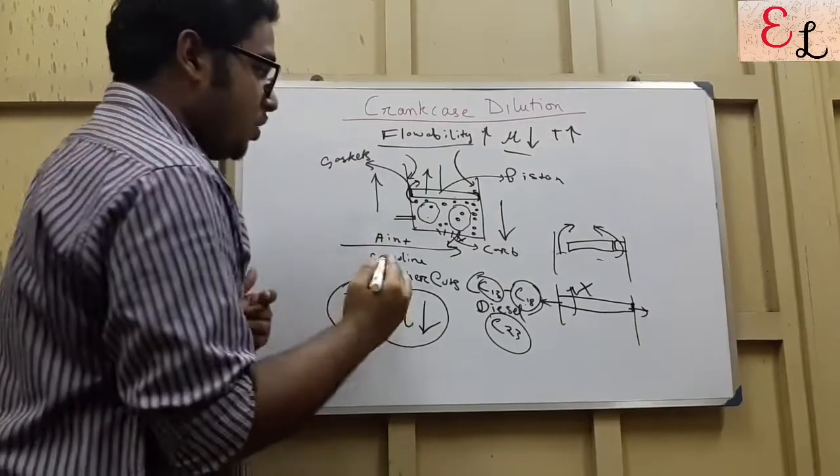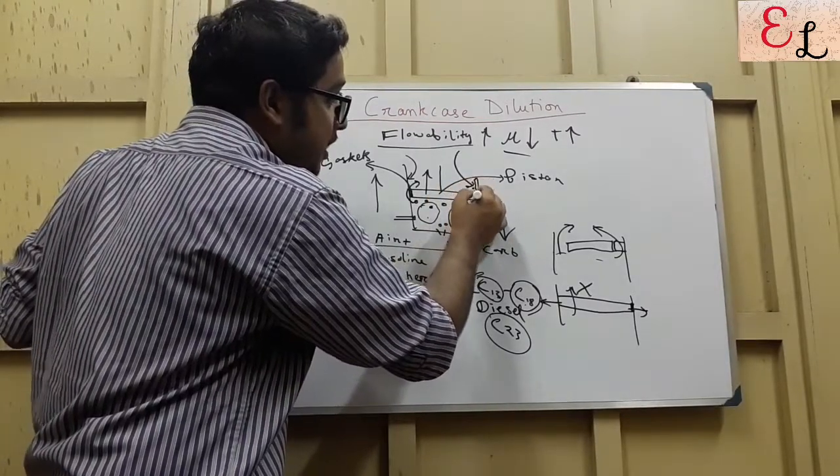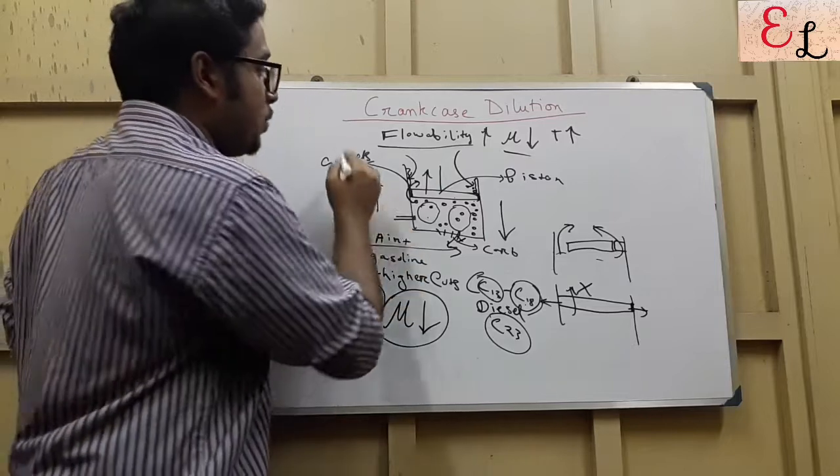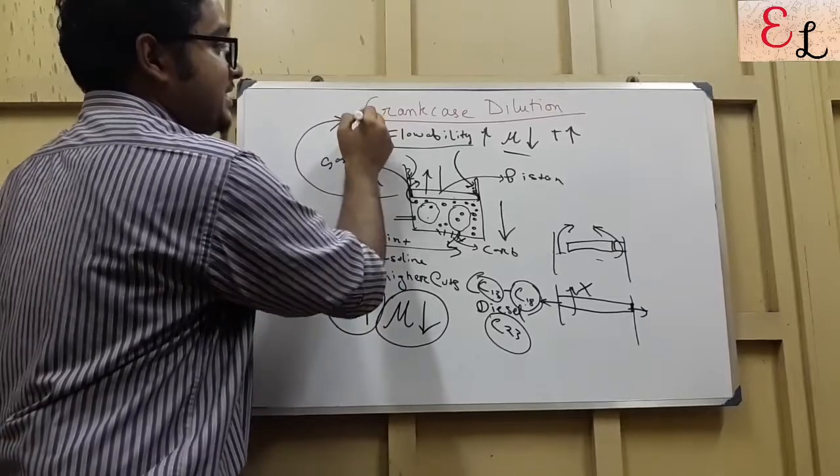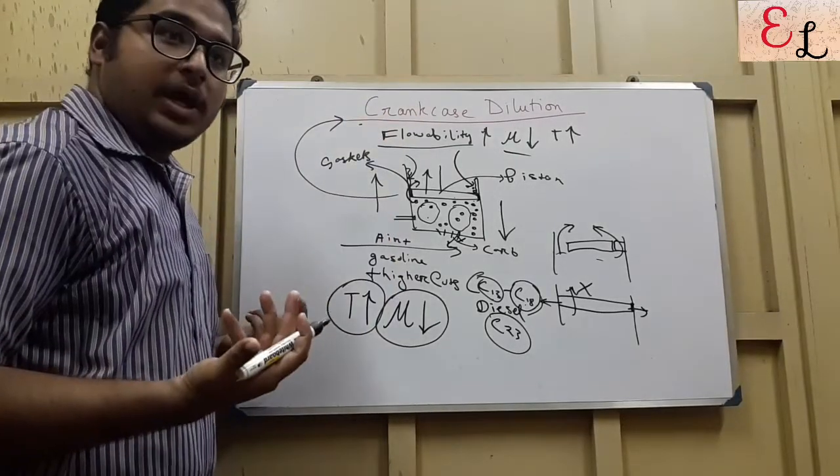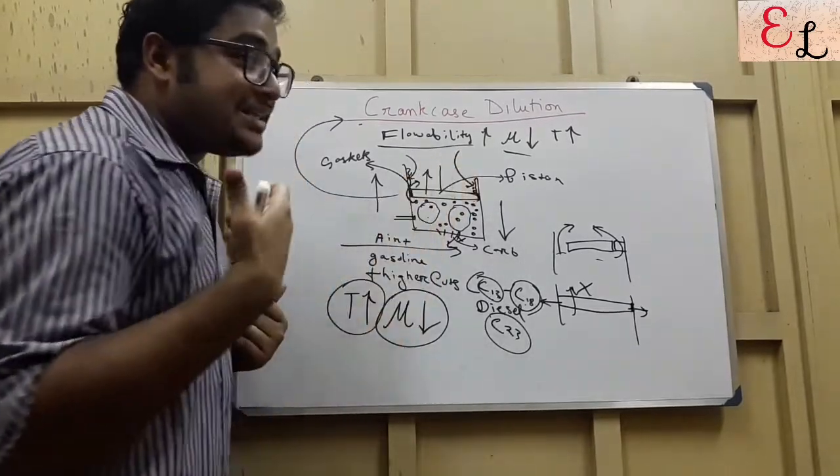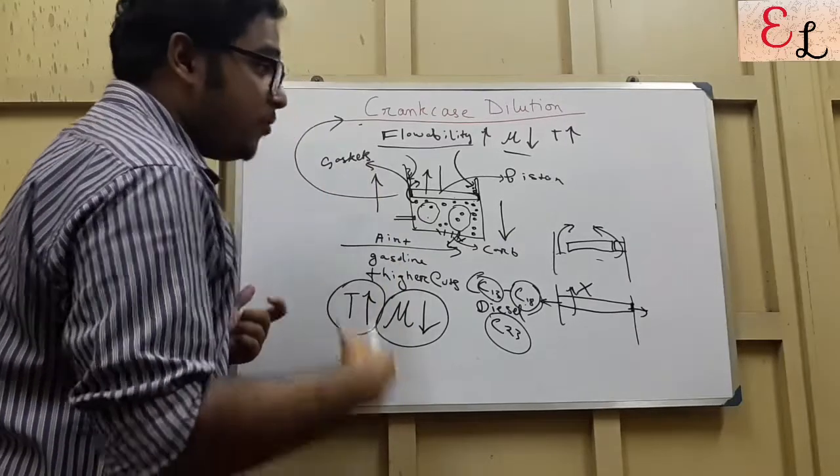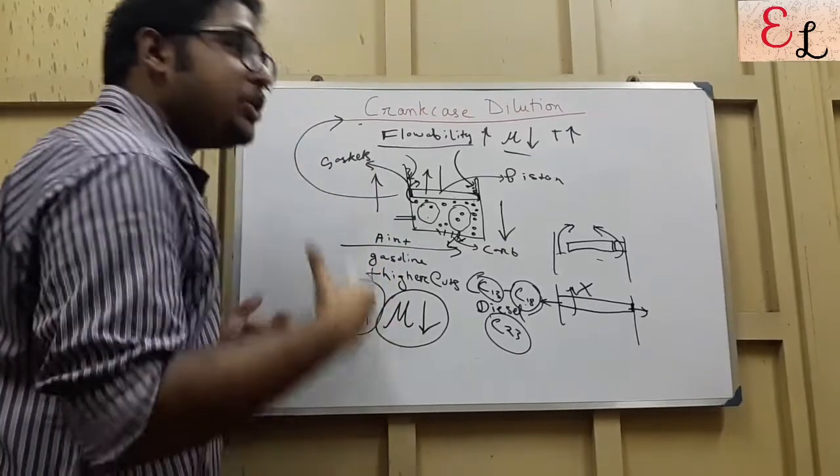Once they do so, these kerosene or diesel droplets go and mix with the lubricants that are given here, resulting in what we call a dilution of the lubricant or a crankcase dilution. That is our topic for today. So, what happens is, this lubricant gets diluted. It loses its original property of lubrication, which finally results in no lubrication or no cooling.